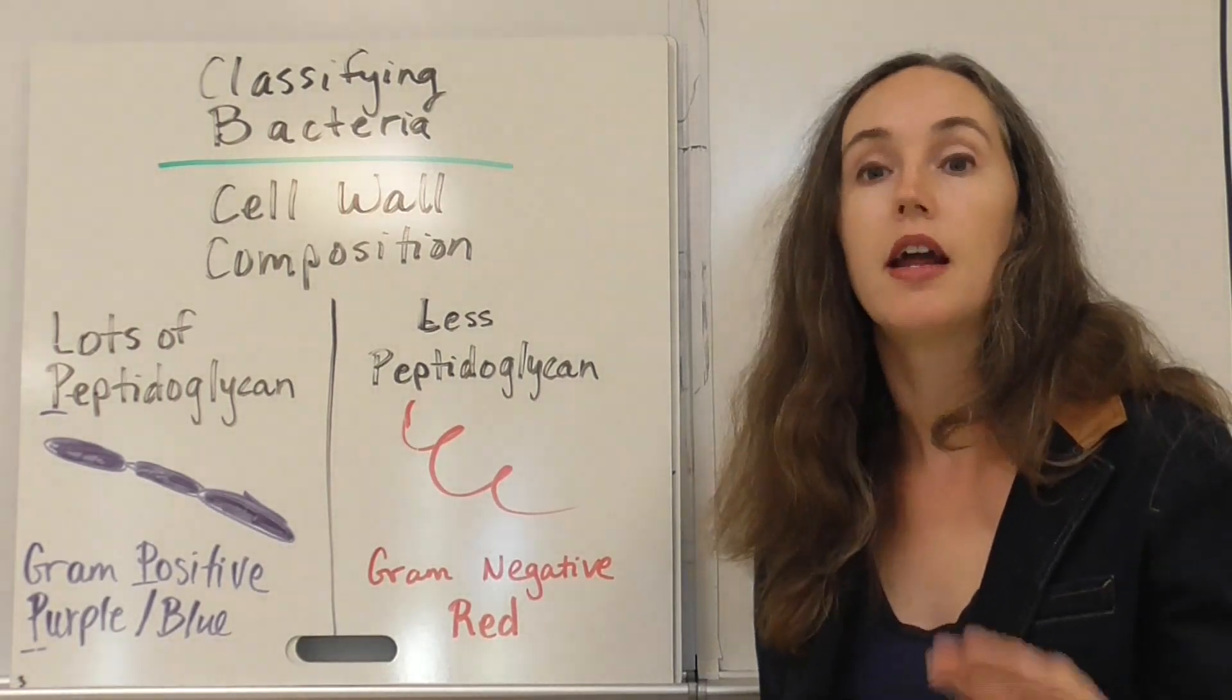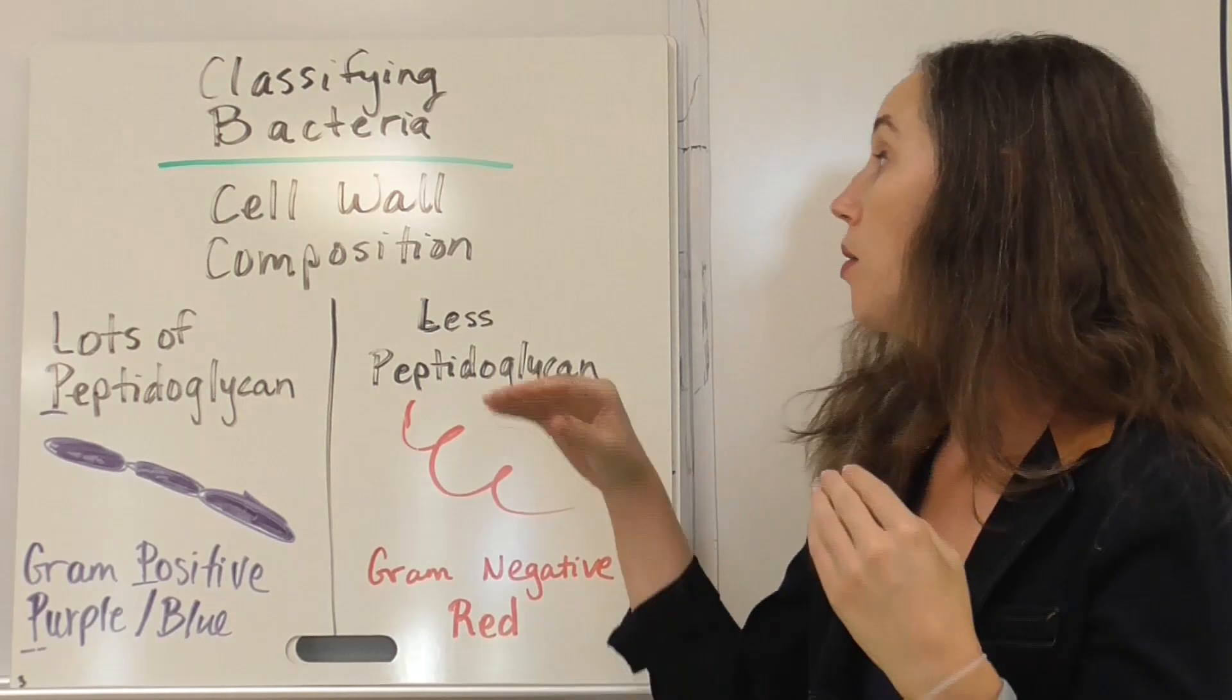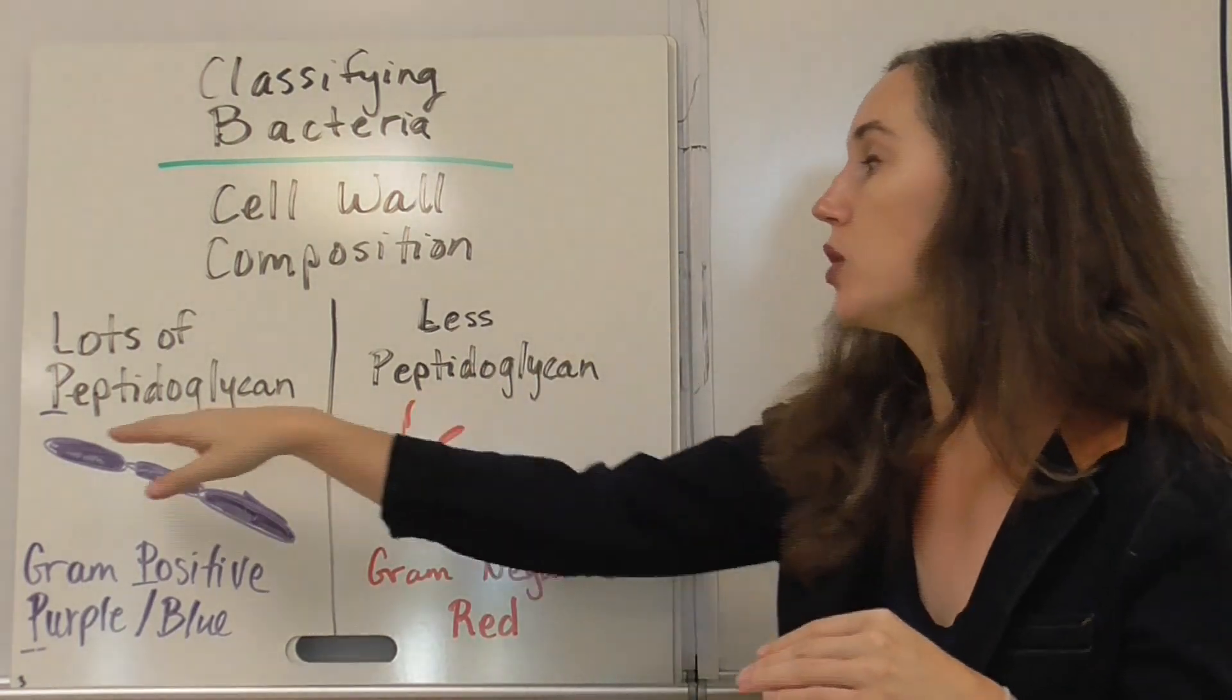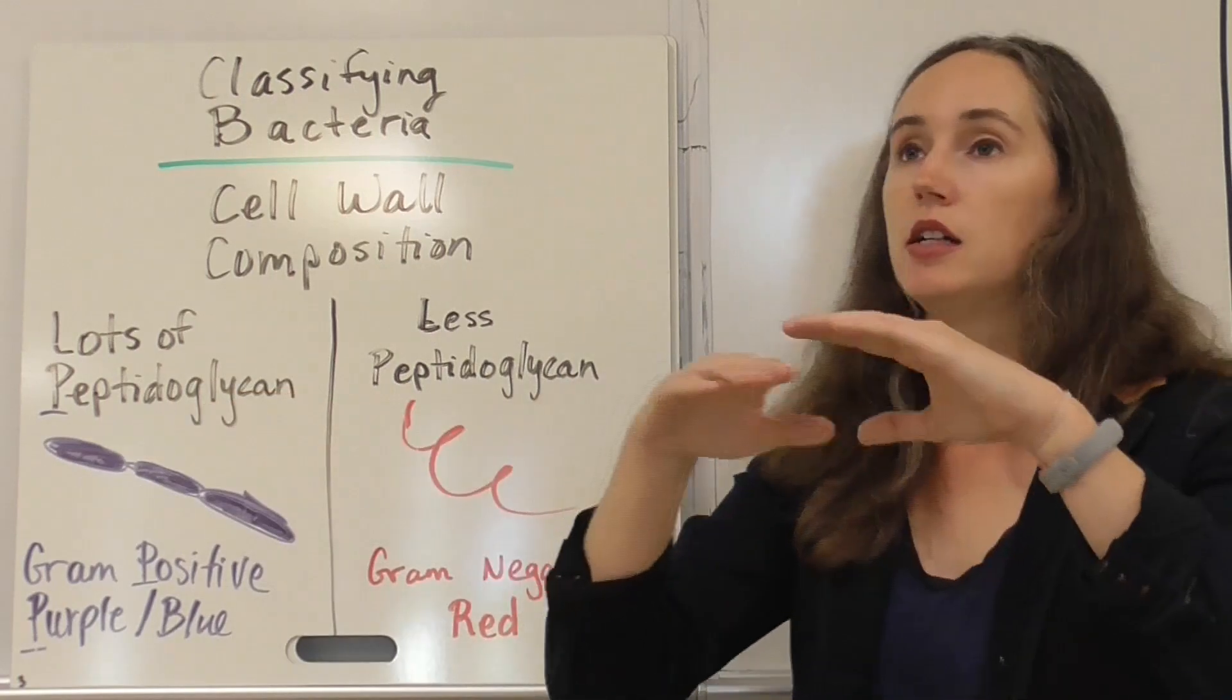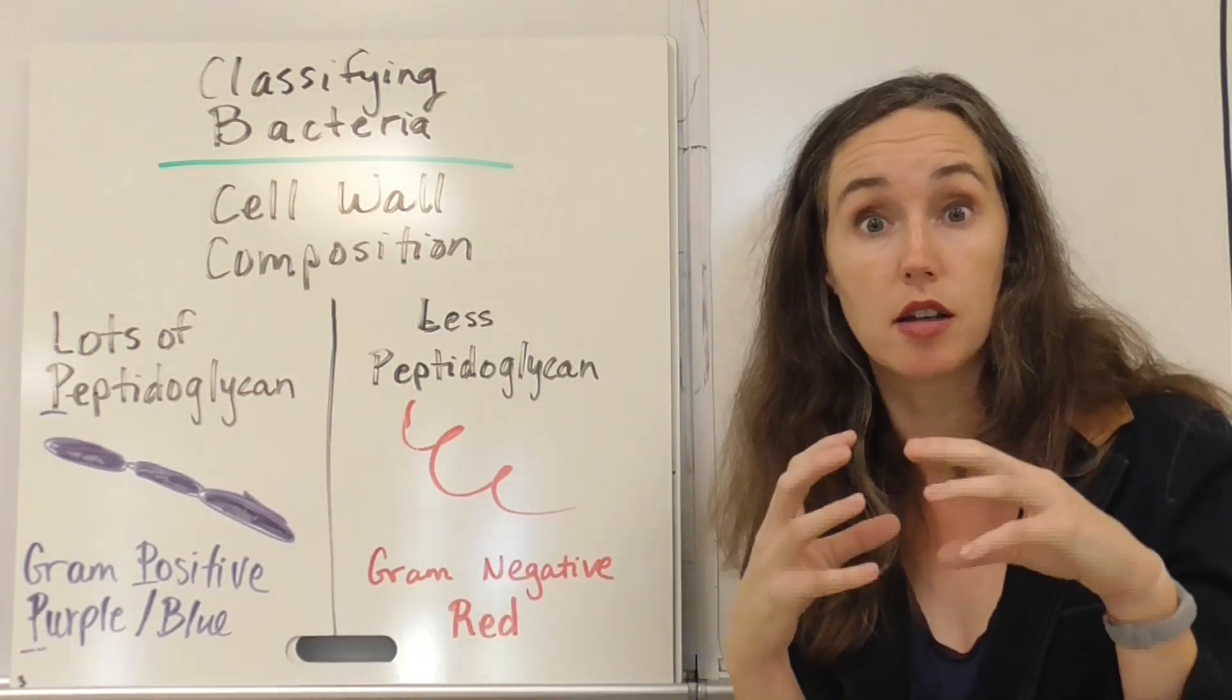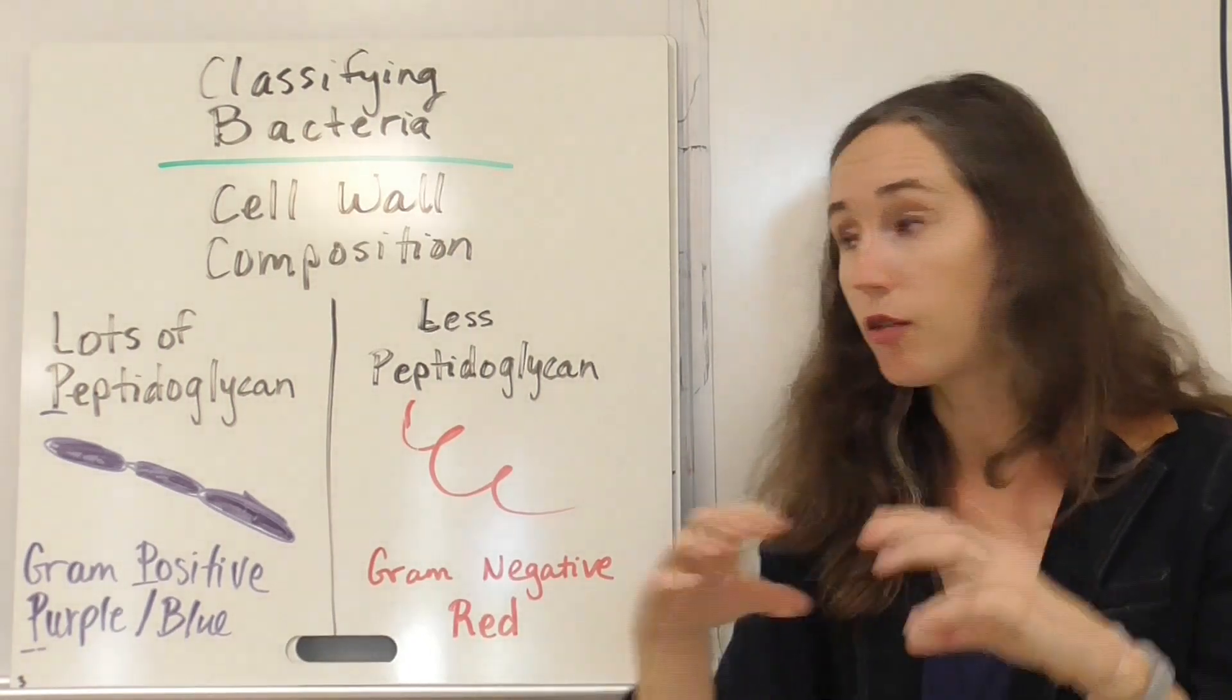Now for the second way. As I said in the first slide, cell walls of bacteria are made up of a molecule called peptidoglycan. It's a carbohydrate but with some amino acids coming off of it. And peptidoglycan, some bacteria have very thick lots and lots and lots of peptidoglycan. And if they do have a lot of peptidoglycan, then they are called gram positive.